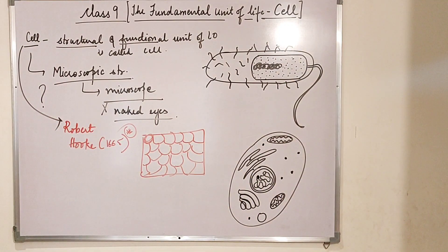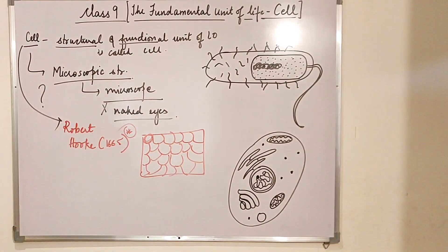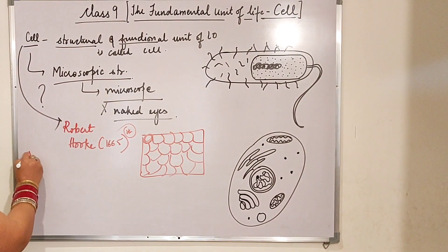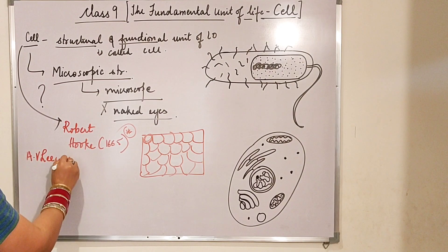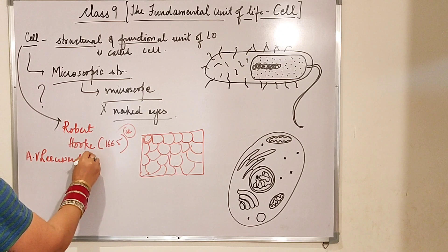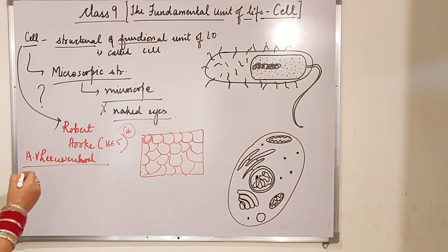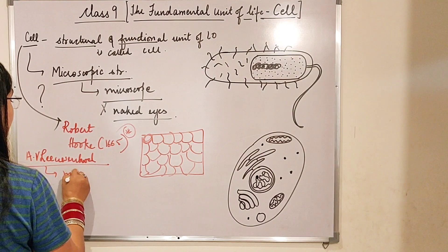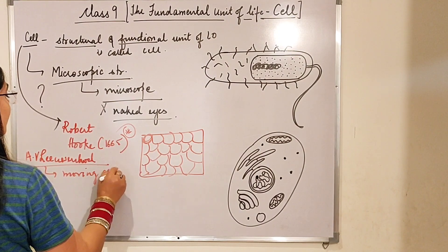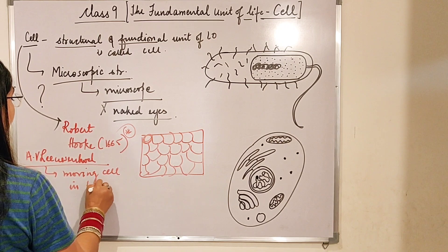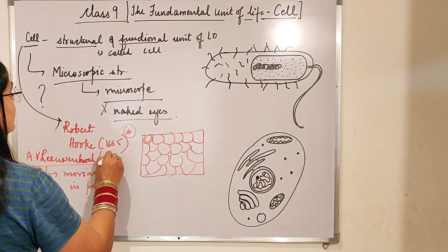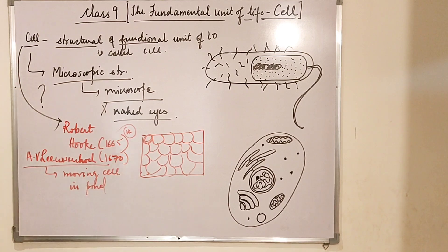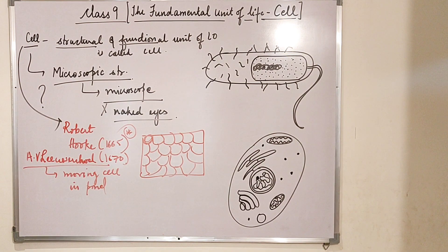There was another scientist: Anton van Leeuwenhoek. He discovered the living cell — he discovered moving cells in a pond in 1670.